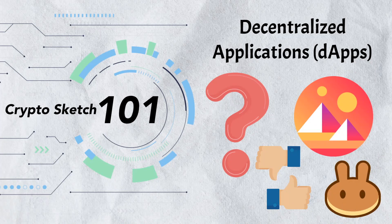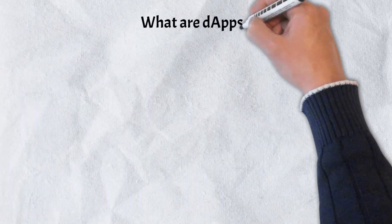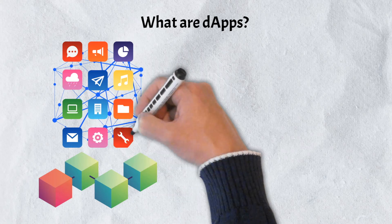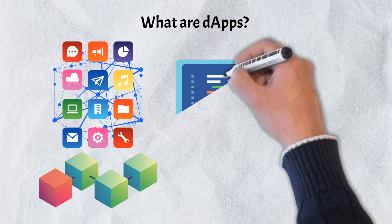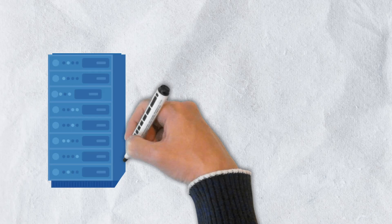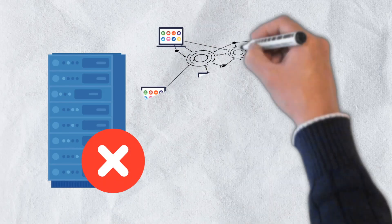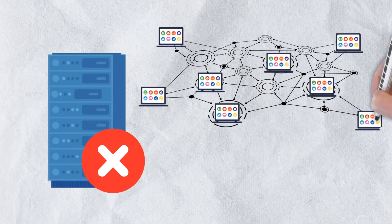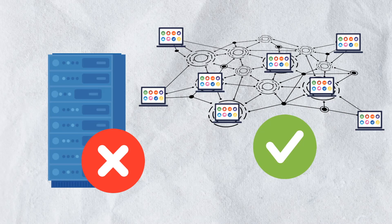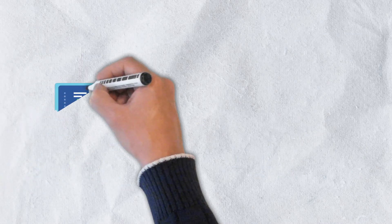Decentralized applications, or dApps, are blockchain-based applications. While they very much have the look and feel of traditional centralized apps, it's their back end that truly differentiates them. Instead of running on a centralized server, dApps have code that runs on a distributed computer network and typically exhibit a number of characteristics. Firstly, they are open source.